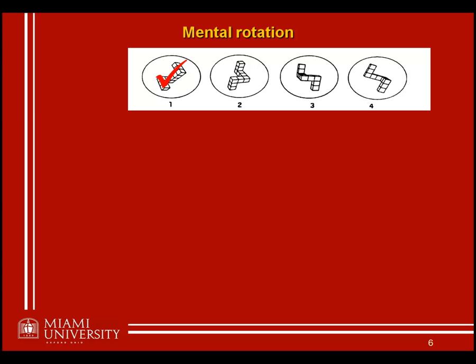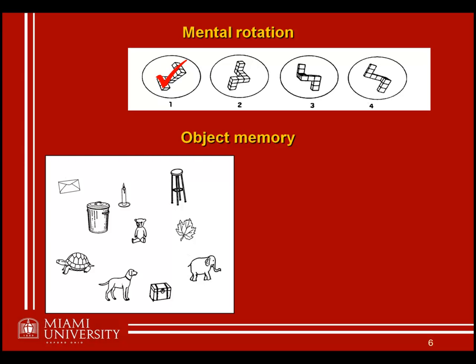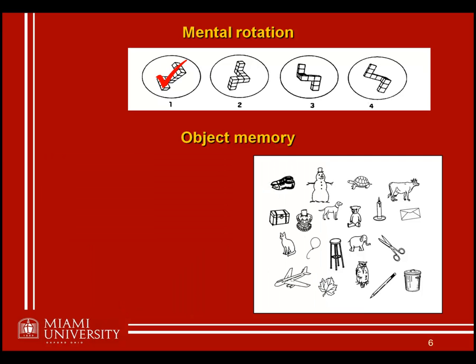There are also tasks where females tend to do better, and that is in an object memory task. The way this is typically investigated is if I show you an array of objects and ask you to study them, then show you another set and ask you to identify which ones were in the first slide — females actually tend to do slightly better than males at correctly identifying which objects in the second picture were present in the first picture.